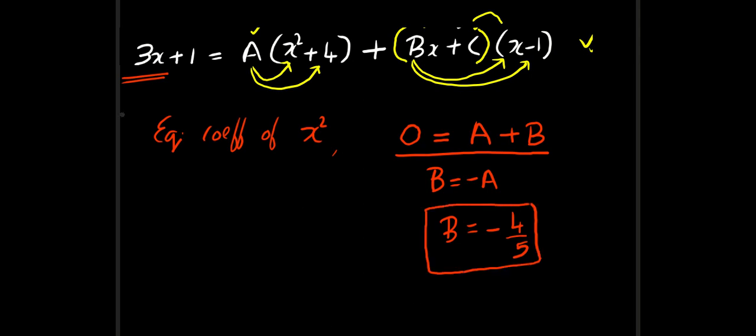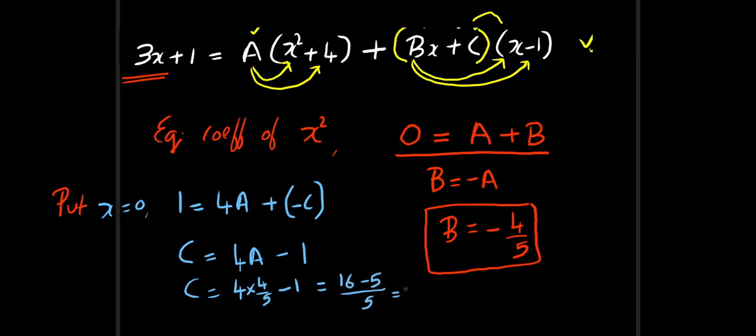So we got the second value. Now for the last value, we do something simple. I am going to put x some random values. So I am going to put x is equal to 0. We get 3 into 0, that is 0, 0 plus 1, 1. And here we get 4a plus 0 plus c, 0 minus 1, so that will be minus c. So I am going to take c that side. I hope you understood, because 0 plus c is c, and 0 minus 1 is minus 1. So totally it will be minus c. And that is 4a minus 1. So c will be 4 into 4 by 5 minus 1, and that is 16 minus 5 by 5, and that will be 11 by 5.